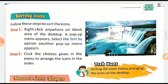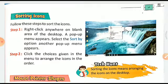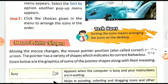Follow these steps: right-click anywhere on a blank area on the desktop. A pop-up menu appears. Select the 'Sort by' option. Another pop-up menu appears. Click the choices given in the menu to arrange the icons in the order you want. There will be various choices, and you have to choose the way in which you want them sorted. Sorting the icons means arranging the icons on the desktop.